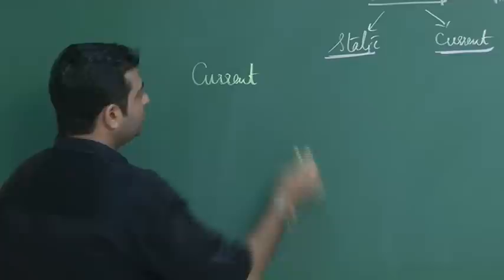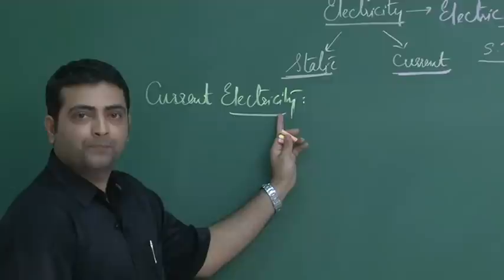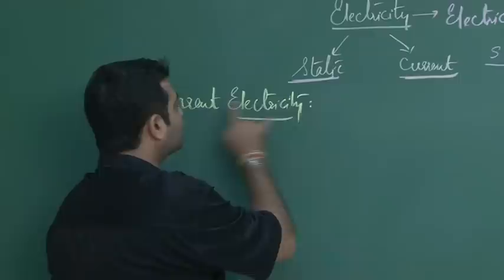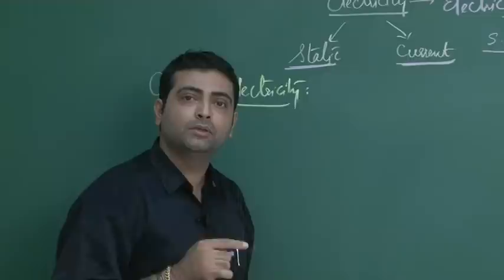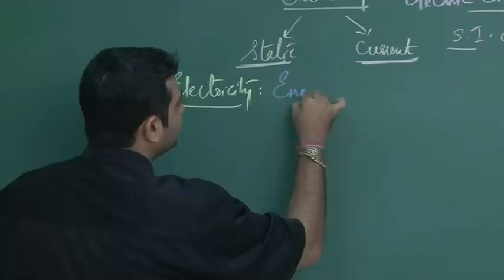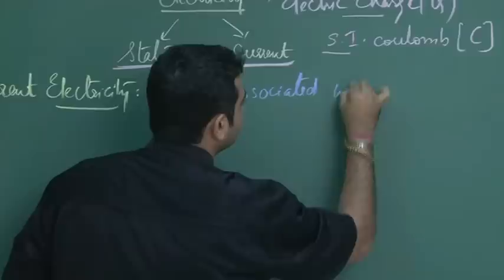If I want to speak about what the term current electricity means — electricity is electric charge, capital Q, SI unit Coulomb. The word current stands for motion of electric charge. Any object when set into motion has some energy associated with it. Likewise, for current electricity, it is the energy associated with a moving charge.